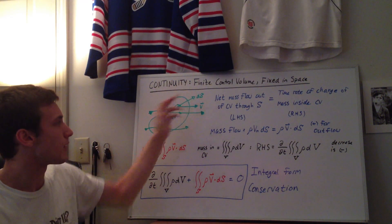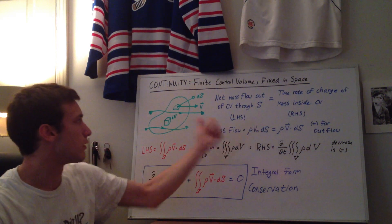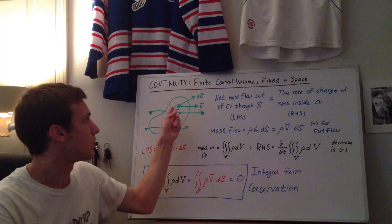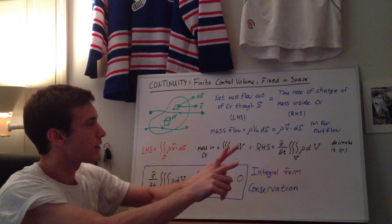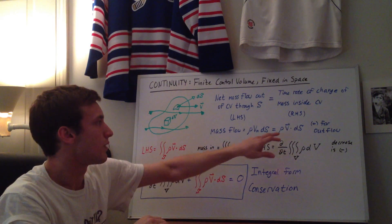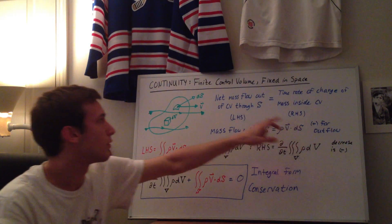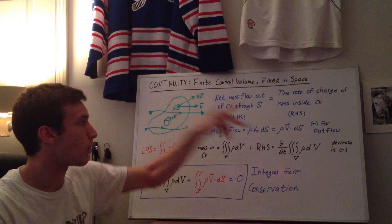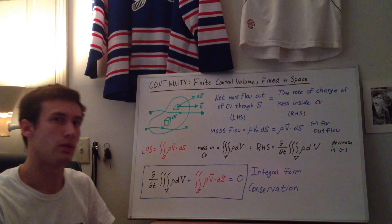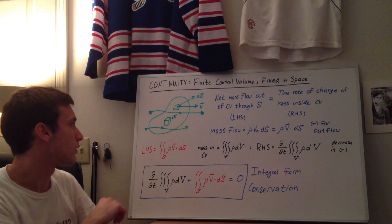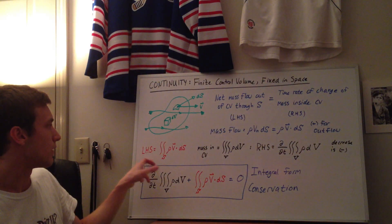If the surface area dS is always pointing outwards, the velocity vector can either be going in or going out. When you take the dot product, since dS is pointing out, and you dot it with the velocity vector going out, you get positive — meaning outflow is positive. If the velocity vector is going into the surface, it'll be the opposite direction as dS, and the dot product will be negative. So the left-hand side is the double integral over the surface S of the net mass flow out of the control volume.